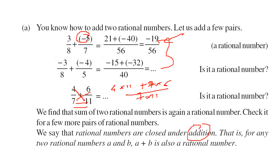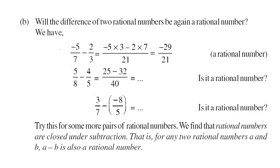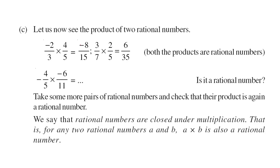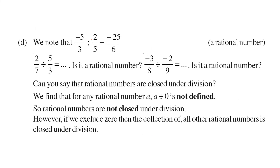Rational numbers are closed under addition and subtraction as well, because ultimately subtraction and addition are related — when you subtract you are adding the negative of that number. So a minus b is also a rational number if a and b are rational numbers. When you multiply two P by Q forms you always get a rational number. So if a and b are rational numbers, a into b is also a rational number.